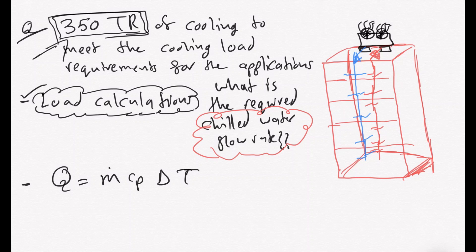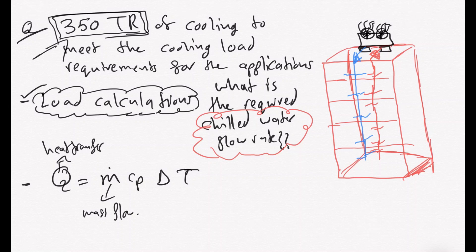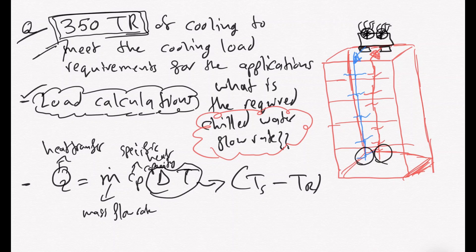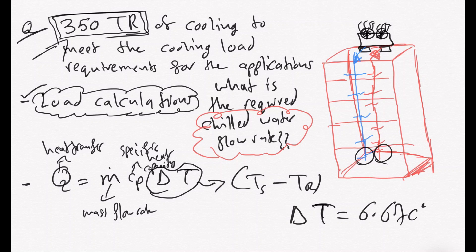We're brushing up on this formula to help you recap where it came from — in the previous video we explained in detail the importance of the formula and how it leads to the flow rate calculations. Here, q is the heat transfer, m-dot is the mass flow rate, cp is the specific heat capacity of water, and delta T — which is an important value — is the temperature difference between the supply and return lines. Delta T is going to be 6.67 degrees Celsius for a commercial or residential building within a specific region.